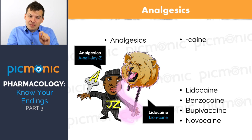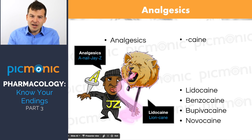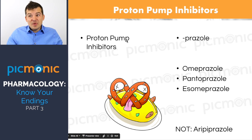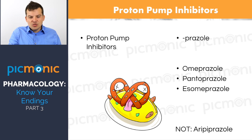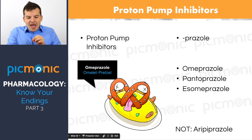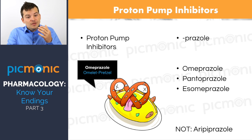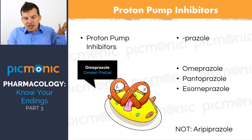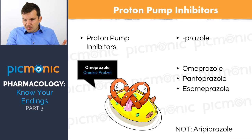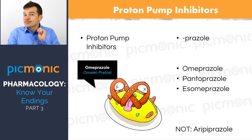Proton pump inhibitors, or PPIs, are another class. Remember when we said antifungals end in -azole? PPIs like omeprazole also end in -azole, so don't confuse them. The Pickmonic image uses a pretzel omelet for omeprazole. PPIs include omeprazole, pantoprazole (Protonix), and esomeprazole. They reduce acid by blocking proton pumps. PPIs work better than H2 receptor blockers.